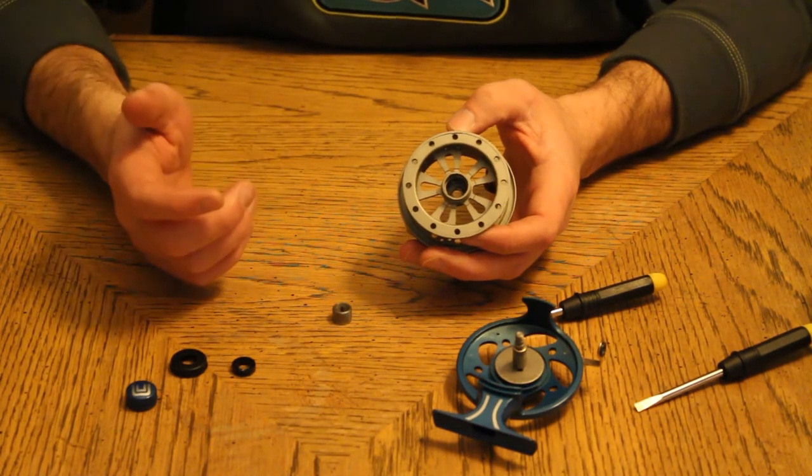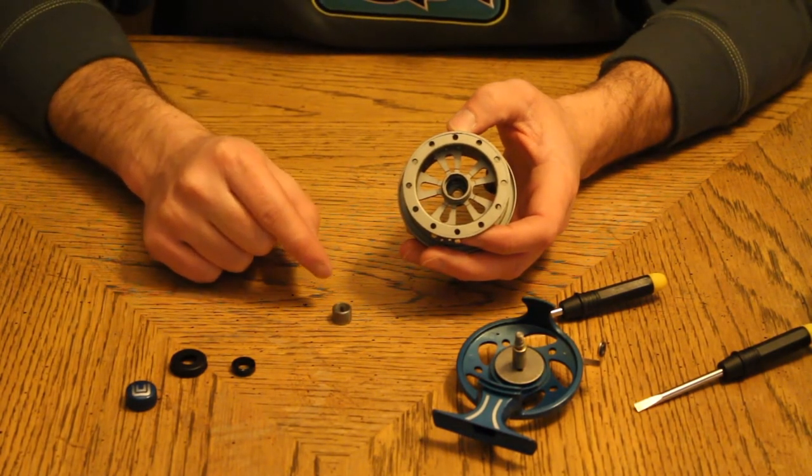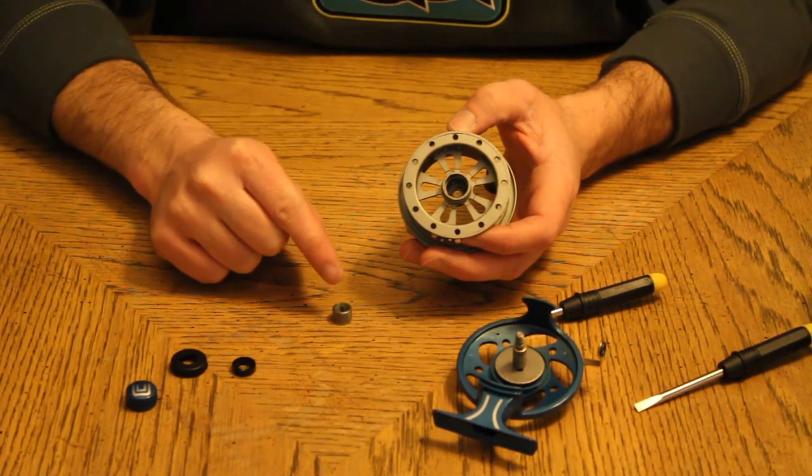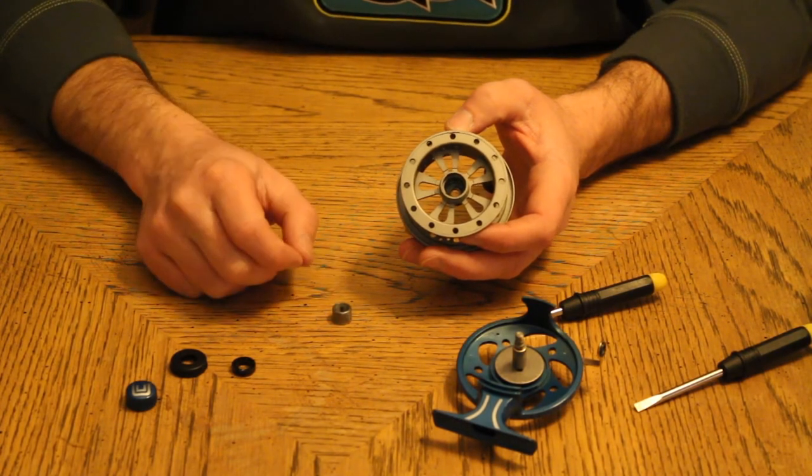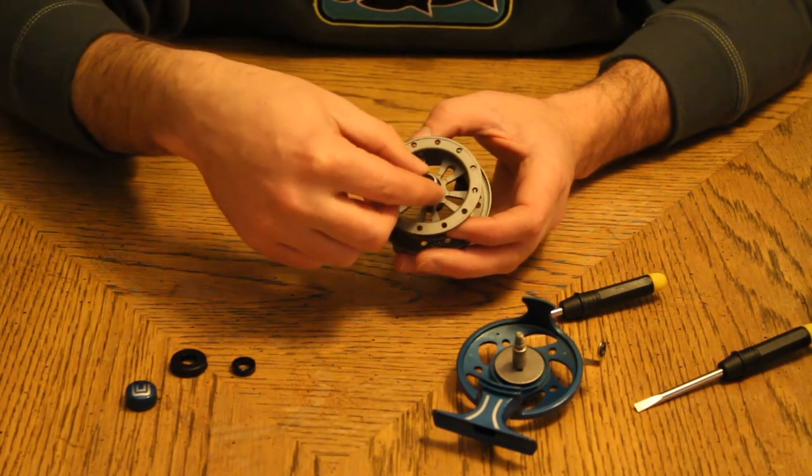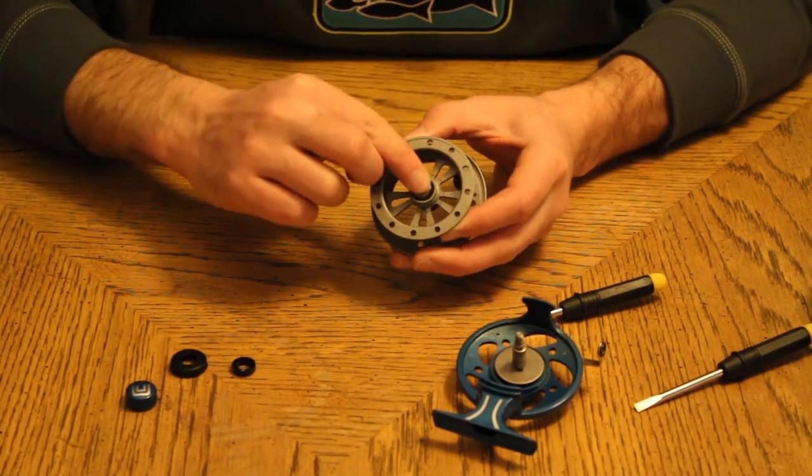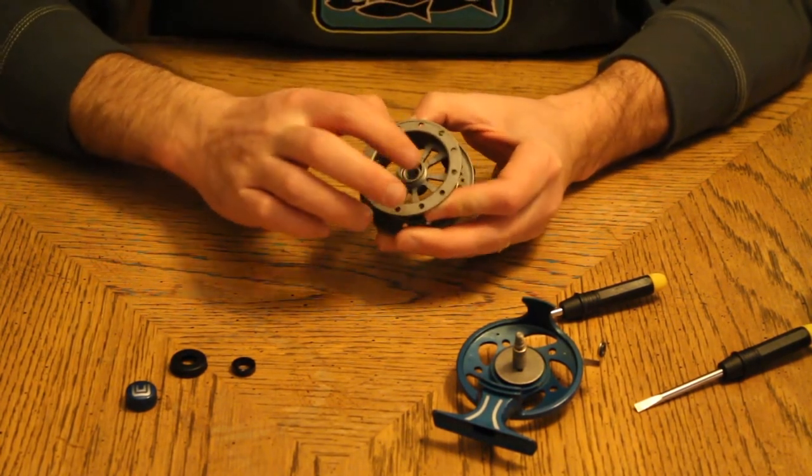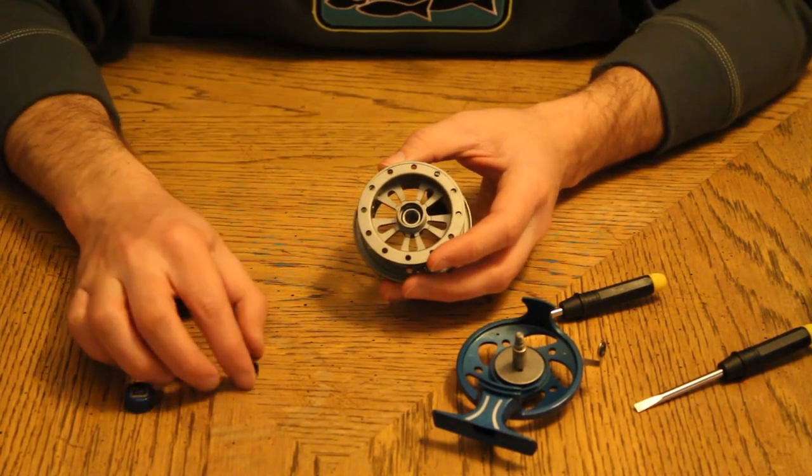In order to switch to the retrieve you basically all you have to do is reverse the direction that this one way clutch is in the spool. It popped out like that. I'm going to put it back in that direction. You kind of find the sweet spot and then you just replace everything.